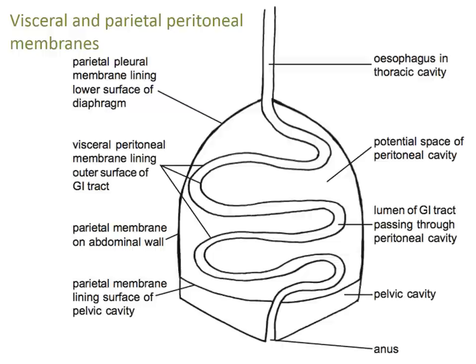In other abnormal conditions, excessive volumes of fluid may accumulate in the peritoneal cavity, converting the potential space into an actual space. When fluid fills up the peritoneal cavity, this is referred to as ascites. You might see this, for example, in advanced cirrhosis of the liver or in some malignant conditions.